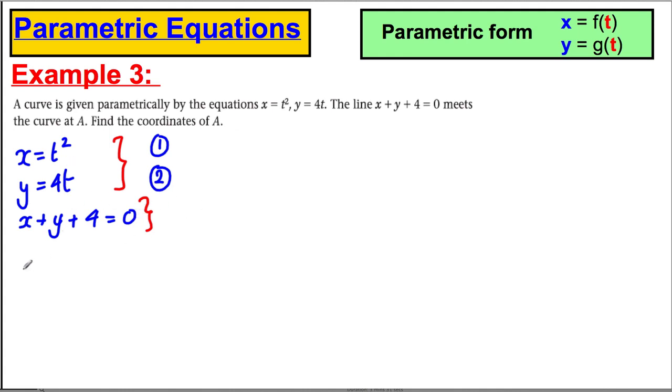So we could substitute these in, and we could write that t squared, substituting for x, plus 4t, substituting for y, plus 4 equals 0. And this factorises. This is a perfect square: (t + 2) squared equals 0, so therefore t equals negative 2.